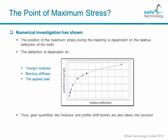The dependencies I've just listed — Young's modulus, bending stiffness, and so on — also mean that gear quantities like the modulus and the profile shift factors are automatically being taken into account.